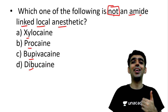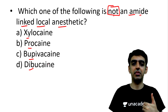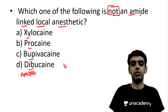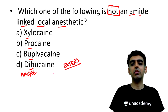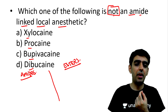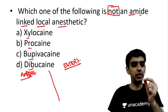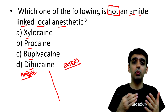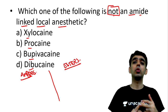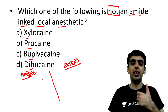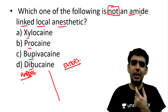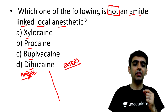To determine and classify local anesthetics, we divide them into amides and esters — that is the structural classification. Local anesthetics can also be classified on the basis of potency and duration of action, but here we are classifying only on the basis of structure. The tip to remember amides is that amide local anesthetics have two i's in their spelling.